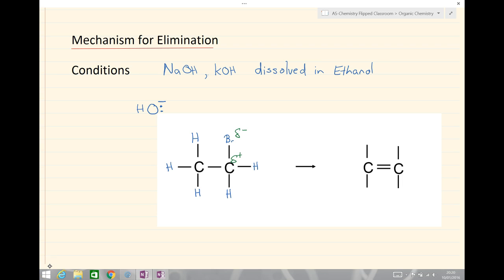We'll have a look at the mechanism for elimination in just a moment. The conditions for when we get an elimination reaction, that is when small molecules are removed, is when we have sodium hydroxide or potassium hydroxide dissolved in ethanol with a halogenoalkane. We've seen this before—we had sodium hydroxide or potassium hydroxide dissolved in water, then we got substitution, but this time if it's dissolved in ethanol we get a slightly different reaction.